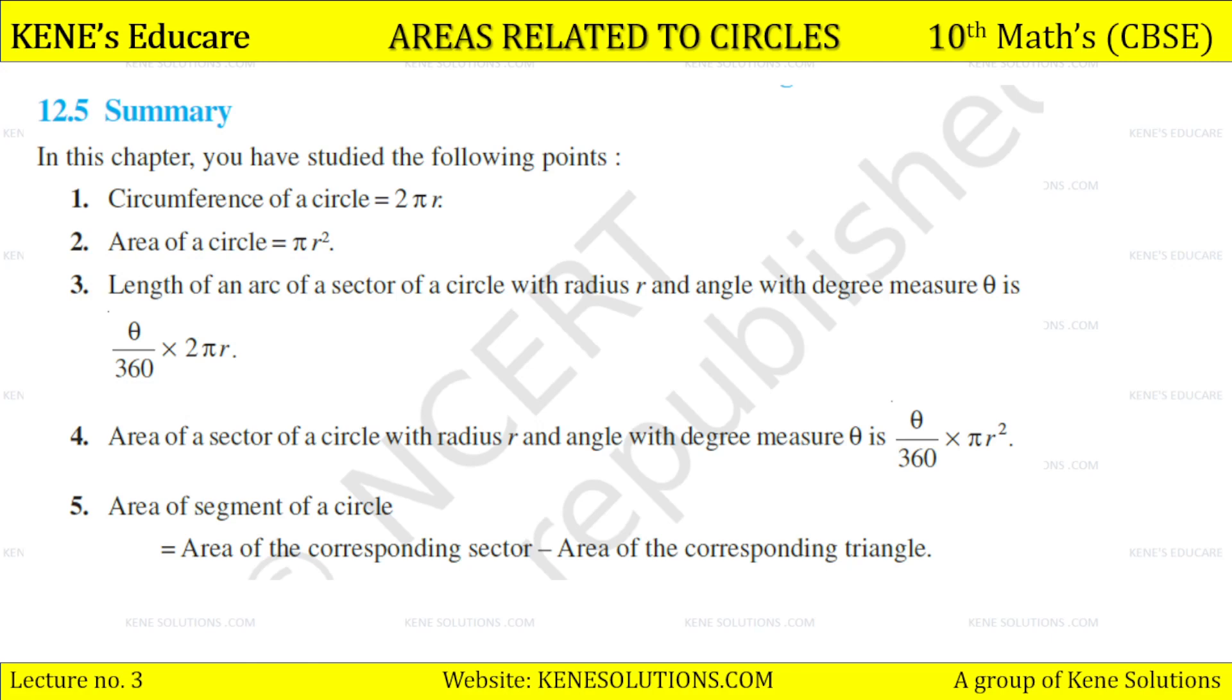Area of a sector of a circle with radius r and angle θ is θ/360 × πr². Area of a segment of a circle is equal to area of the corresponding sector minus area of the corresponding triangle.